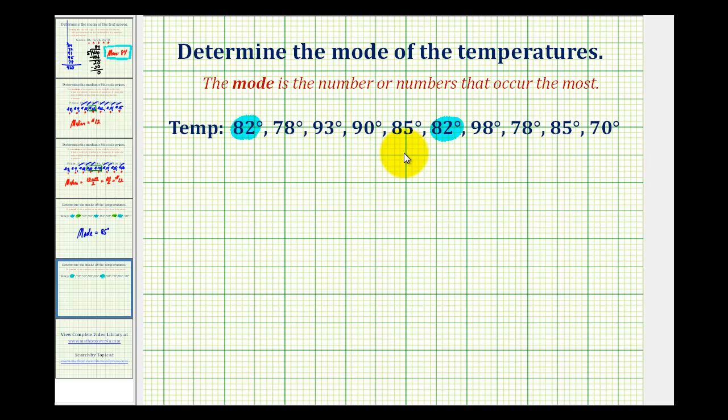Now let's take a look at 85 degrees. 85 degrees occurs twice as well, once here and once here.